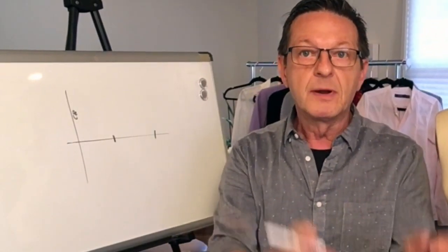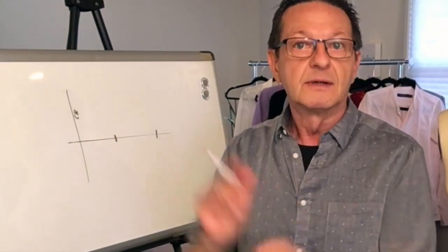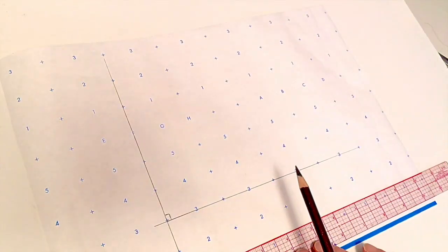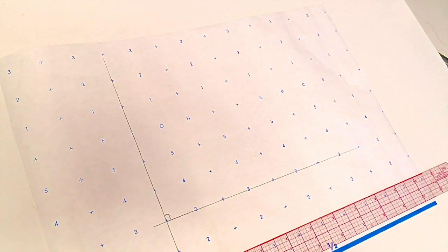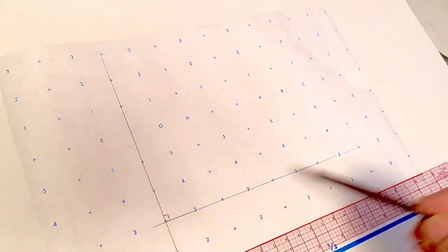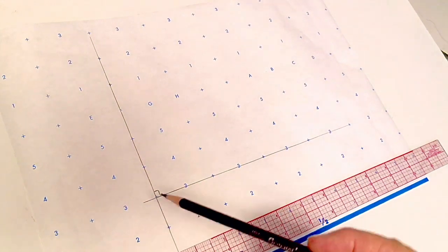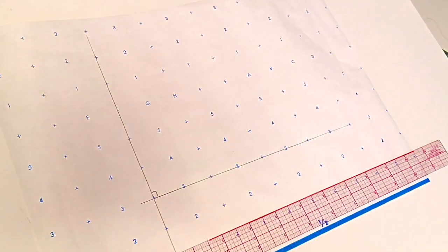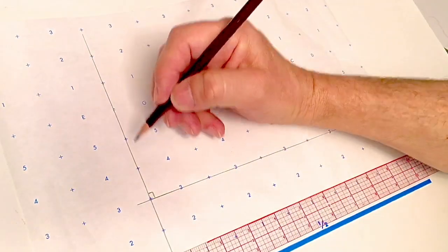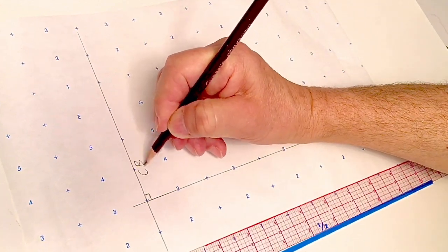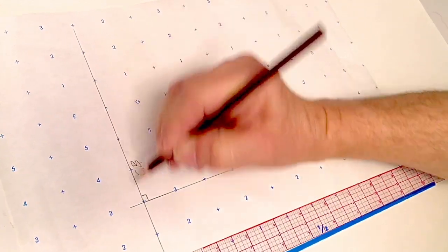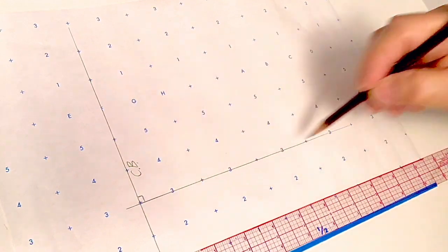Now I'm going to take it to dotted paper and show you exactly how we draft this. We're going to start by drawing two lines perpendicular to each other, and that means this corner right here is a 90-degree angle. We're going to label this CB for center back. This will be our center back and this will be our neckline.